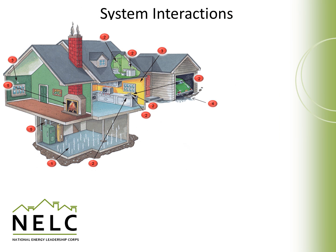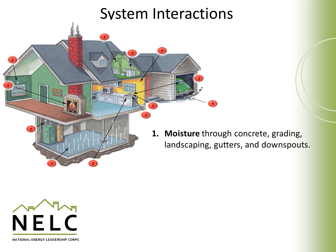Let's take a look at some different systems interactions that we should be conscious of in a home. Moisture can enter into our homes through concrete floors. It can be introduced by the slope of a house where water is introduced at the edge of the foundations. Gutters and downspouts are an important part of keeping our house dry — they need to collect that water and get it away from the house.